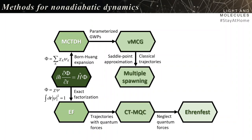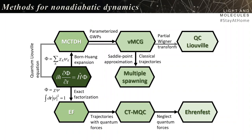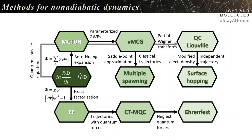You can also look at this problem from a third point of view — from the densities — and look at the quantum Liouville equations. Through a partial Wigner transformation you get QC-Liouville, and with some modification of the electronic densities and imposed independent trajectories, you have surface hopping, the very well-known surface hopping, which is in some way connected to Ehrenfest dynamics.